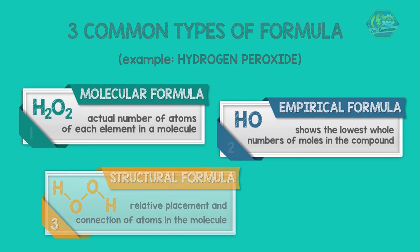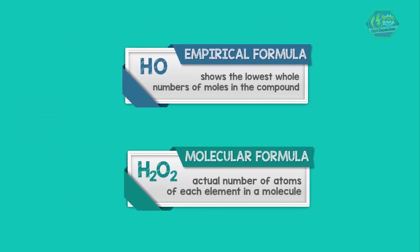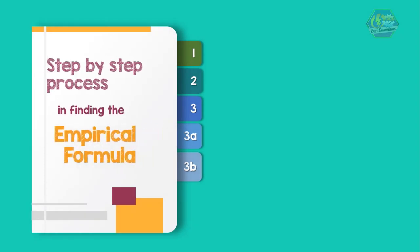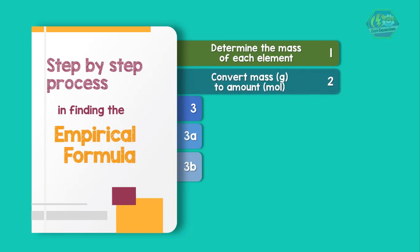These are the step-by-step process in finding the empirical formula. Number one: determine the mass or gram of each component element. Number two: convert each mass gram to amount mole and write a preliminary formula. Number three: convert the amount or mole mathematically to whole number or integer subscripts.